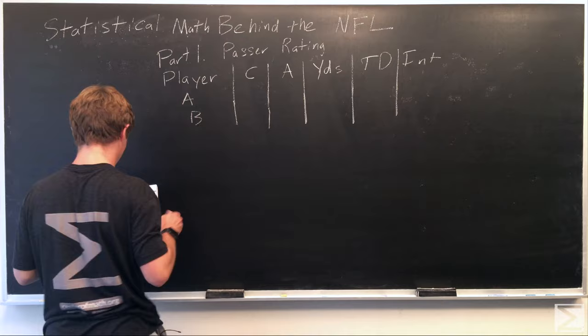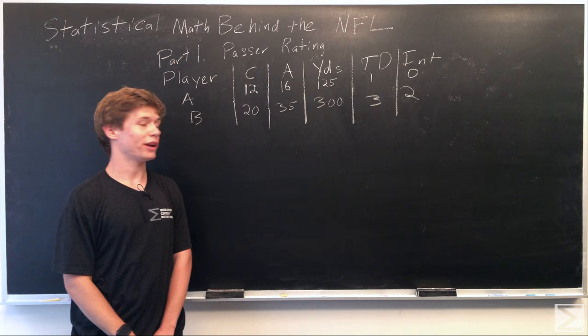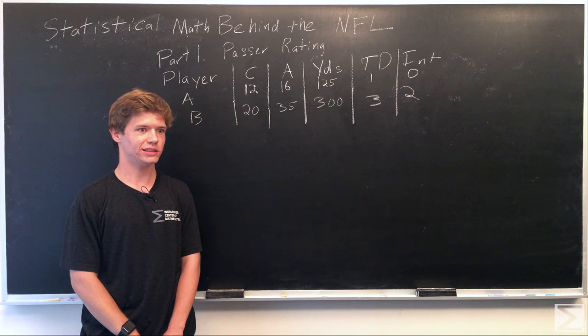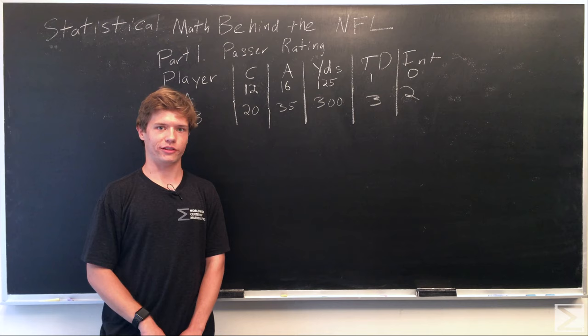We have two hypothetical players, A and B. Player A has thrown fewer passes, fewer yards, fewer touchdowns, and fewer interceptions. Player B has more yards and touchdowns, but he's thrown more interceptions.